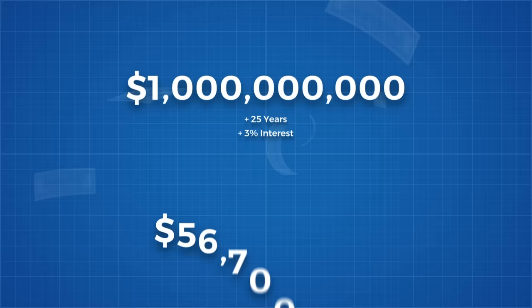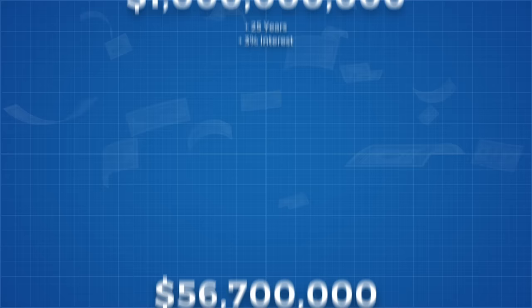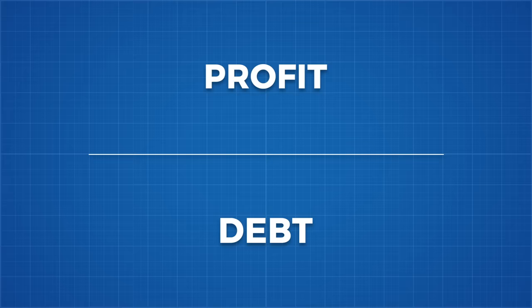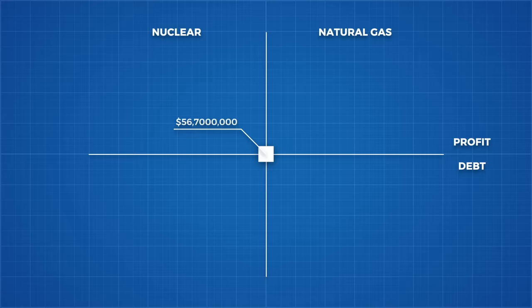One billion dollars on a 25 year repayment plan at a 3% interest rate equates to a $56.7 million payment every year. Here we will borrow an idea from the Illinois Energy Professor and illustrate profit and loss with blocks. Below the x-axis these blocks represent debt, above the line they represent profit. We will place nuclear's profit and loss on the left side of the graph, and natural gas's on the right. Each full block unit like this represents $56.7 million. These blocks can be partially filled to represent smaller fractions. We are using this to bring the vast quantities of money involved into a more human scale.